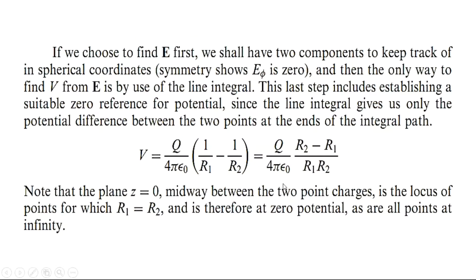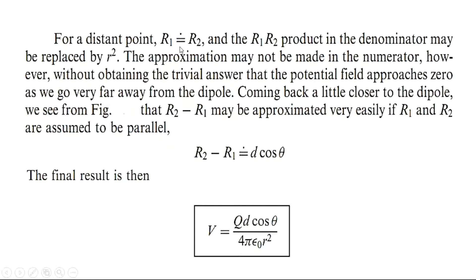For a distant point, R₁ ≈ R₂ and the product R₁R₂ in the denominator may be replaced by R². This approximation must not be made in the numerator, however, or we obtain the trivial answer that the potential approaches zero far from the dipole. Coming closer, we see from the figure that R₂ − R₁ may be approximated as d·cosθ if R₁ and R₂ are assumed to be parallel. The final result is then V = Qd·cosθ / (4πε₀R²).